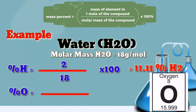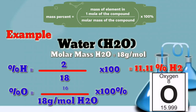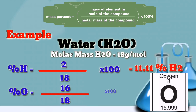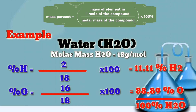Then let's get the percent of oxygen. The atomic weight of oxygen is 16 grams per mole, divided by the molar mass of water which is 18 grams per mole, times 100 percent. So 16 divided by 18 times 100 equals 88.89 percent oxygen. Adding them up: 11.11 percent hydrogen plus 88.89 percent oxygen equals 100 percent water.